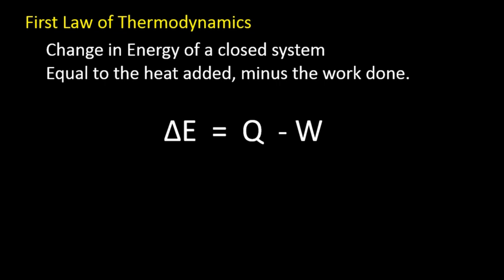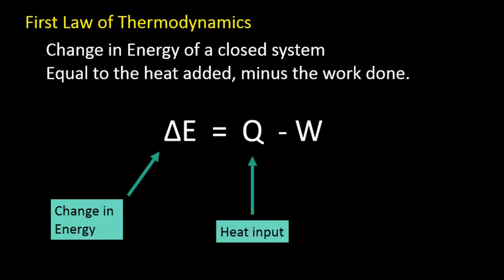So the formula here is ΔE = Q - W where ΔE represents the change in energy, and if you recall in previous lessons that delta, anytime you see that delta think of it as a change in. That's going to equal Q which represents the heat put into the system, and then minus the work that is done.